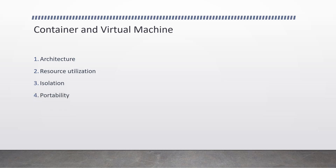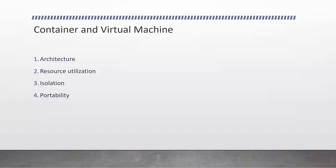The last comparison point is portability. VMs can be moved between different host machines with different hardware and operating systems, making them highly portable. Containers, however, are typically designed to be deployed on a specific operating system and architecture, which can limit their portability. In summary, VMs provide full isolation between guest and host machine but require more resources and are less portable, while containers offer lightweight and fast application isolation but share the host kernel and offer less isolation from the host machine. The choice of technology depends on the specific use case and requirements of the application.